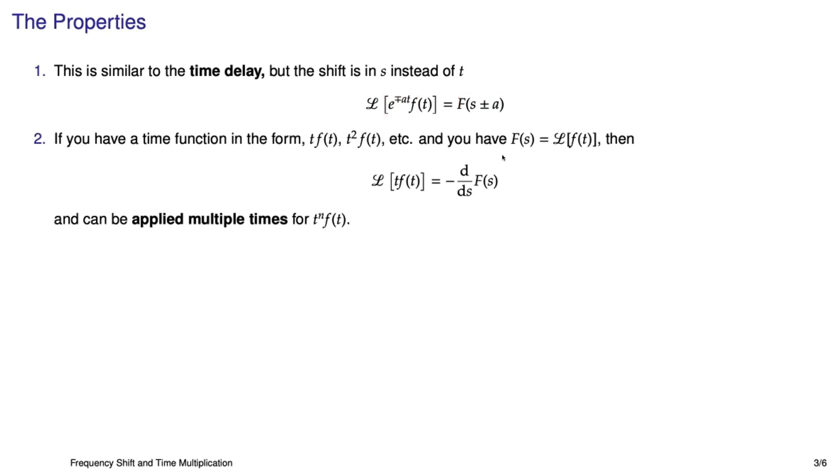The multiplication by time property goes like this. If you recognize that you have a function that's t times f(t), just take the Laplace transform of the f(t), and then take the derivative with respect to s and flip the sign. And you can do this for t, t-squared, t-cubed, etc. I gotta say, using this property by hand can be a little bit cumbersome at times because you might have to take several derivatives with respect to s, and you have these rational functions with polynomials in s in the numerator and denominator, and it can get a little bit messy. But it works just fine.